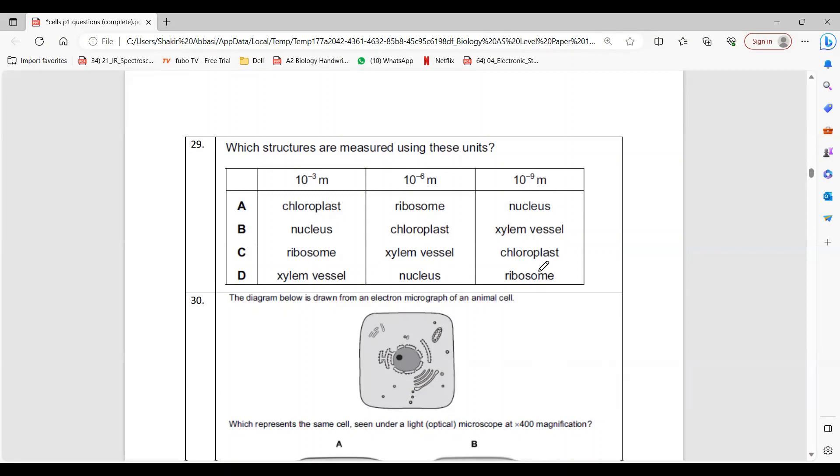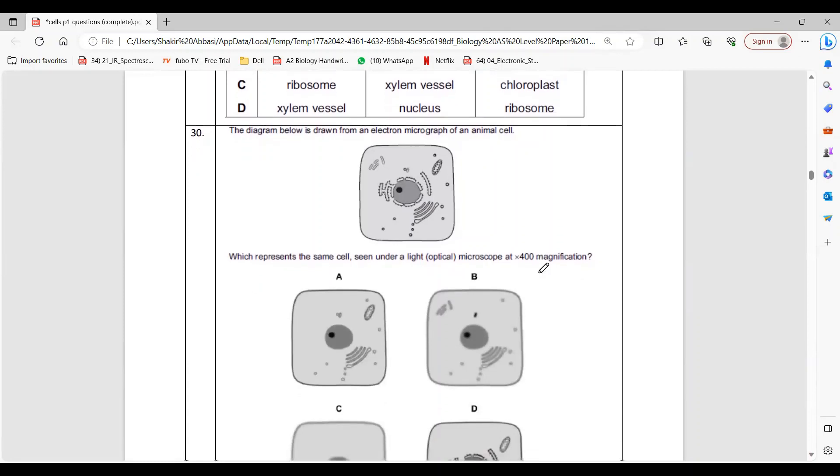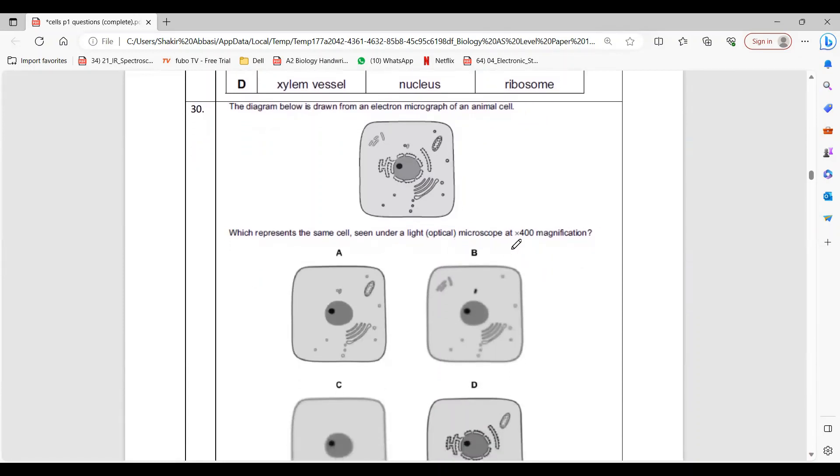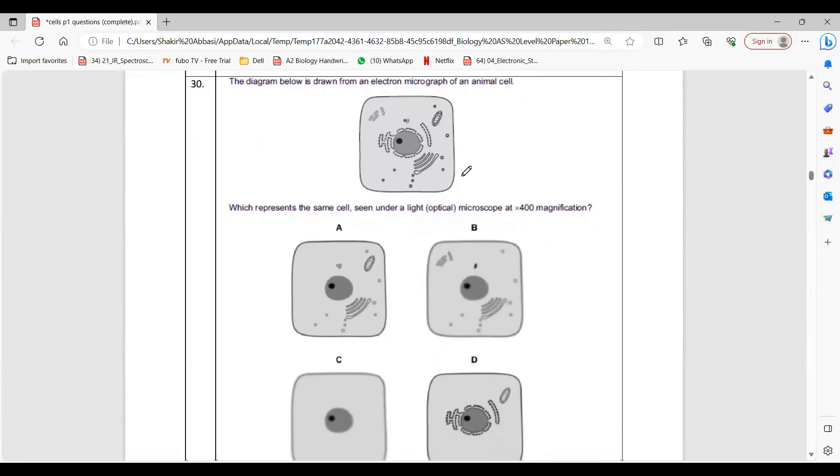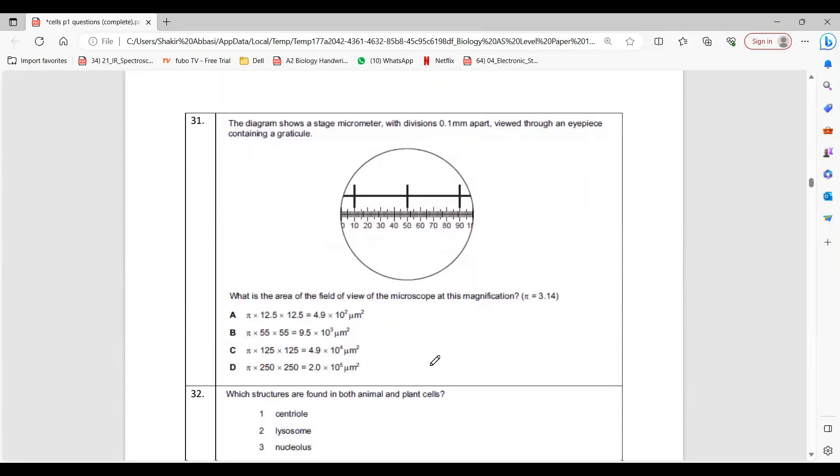Question 30: Light microscope does not have more resolution, so obviously these structures cannot be seen by light microscope because the distance between two membranes of rough ER, smooth ER, Golgi, and mitochondria are too small to be seen by light microscope. So the answer is C.